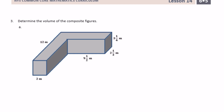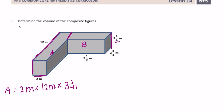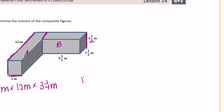Number 3: determine the volume of the composite figures. We can break it up in different ways. I'll split it into parts A and B. For the volume of A: the length is 2 meters, the width is 12 meters, and the height is 3 and 1/4 meters. For B: the length is 9 and 1/2 meters, the width is 2 and 1/3 meters, and the height is also 3 and 1/4 meters.